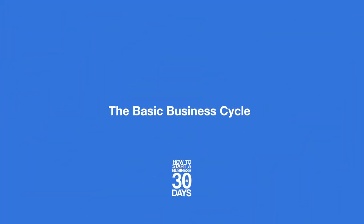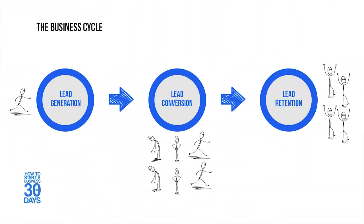Now I want to talk about the three basic parts of business. Every business has a basic structure. I don't care what you're selling — you could be selling dog treats all the way to restaurants. You have three basic things that you need to accomplish in business. The three parts of business are lead generation, lead conversion, and lead retention.